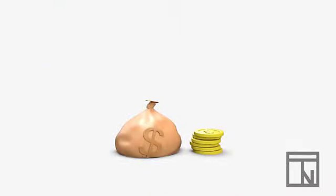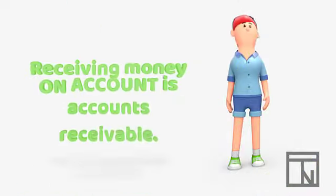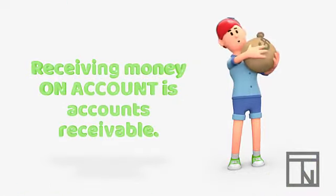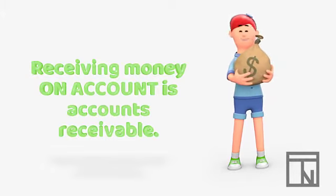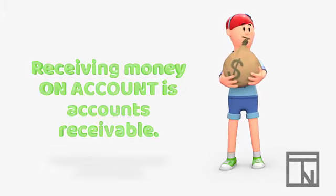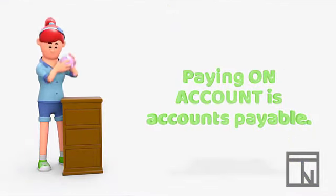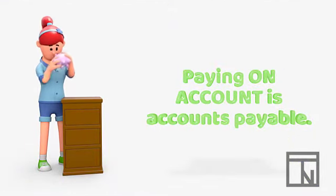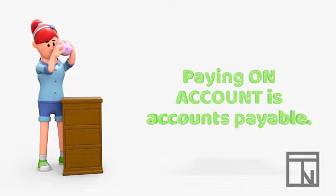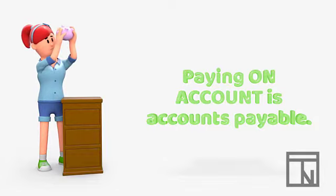One last thing — both of these accounts involve some future payment. Eventually the buyer will need to pay off those debts. When they do, we often see the phrase 'On Account' again. When we see that you are receiving money from a customer on account, this reduces your Accounts Receivable from that customer, since you are receiving money and their debt to you is going down. When we see that you are paying money on account, this reduces your Accounts Payable with that vendor, since you are paying money and your debt to them is going down.